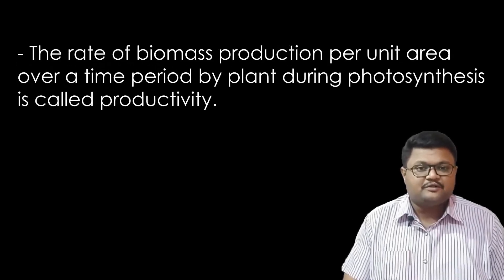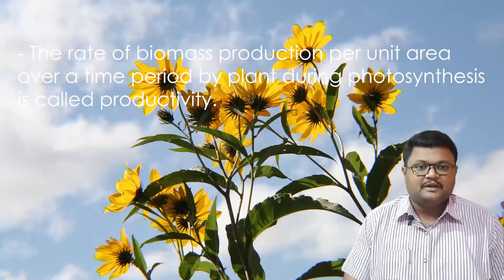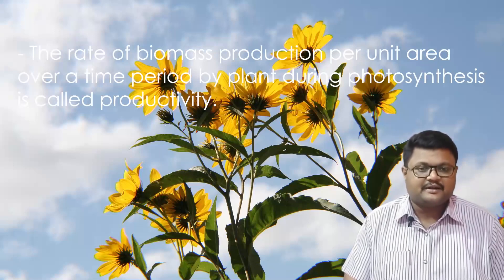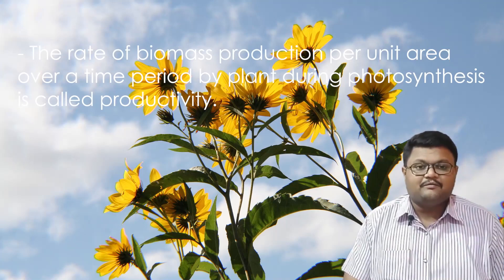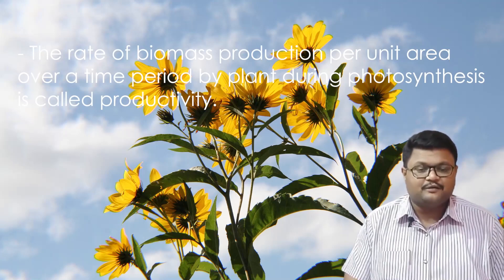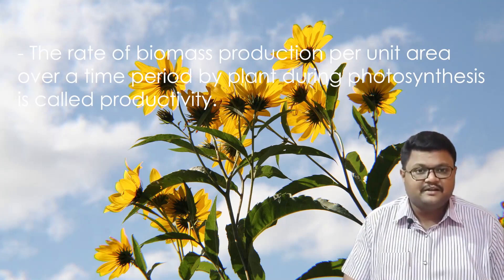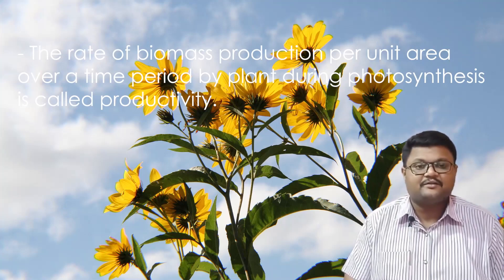The first basic thing is the definition of productivity. It can be defined as the amount of biomass production per unit area per unit time during photosynthesis by the plants. In simple terms, plants perform photosynthesis using sunlight as radiant energy and convert it into food production. When leaves, flowers, stems, branches, or fruits are created, that is called biomass produced.